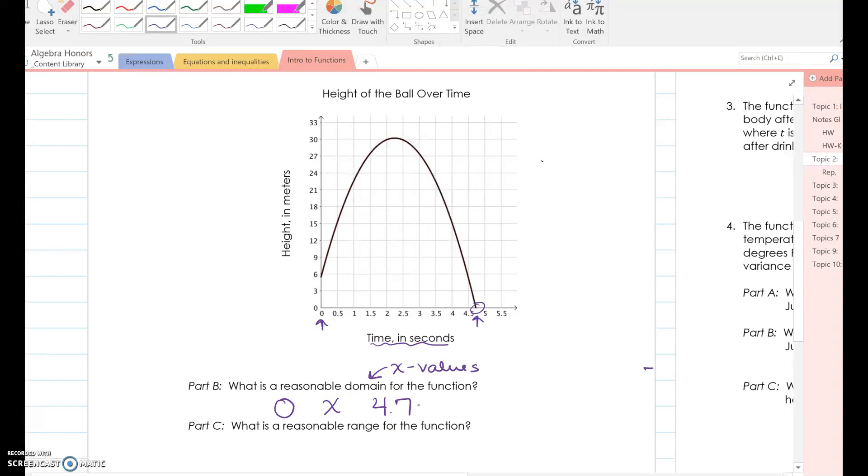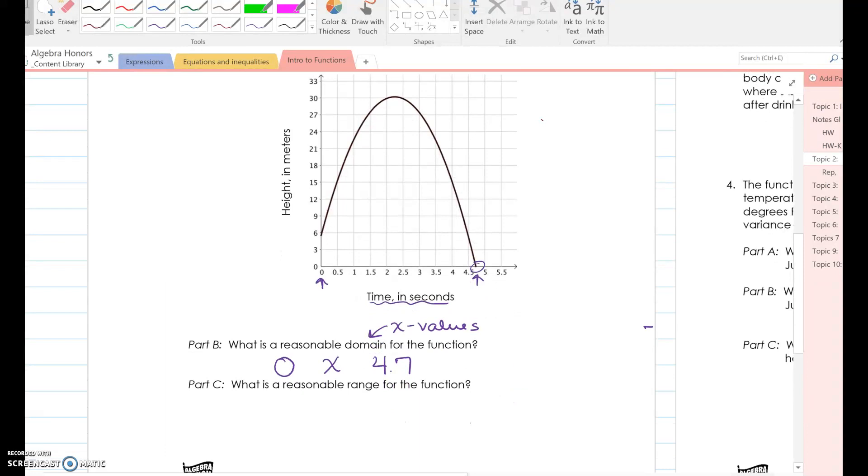Now I need you to think about something that we did last week. How do we write that X is between zero and 4.7? Think about what kind of symbols can we use to represent that? So hopefully you're thinking back to, I've had some responses today about number lines, absolutely true. Interval notation, yes. What do both of those go with? Inequalities. So I can make this a compound inequality because the X is less than or equal to 4.7 and greater than or equal to zero. That is my domain.